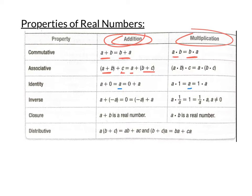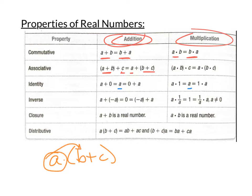Lastly, we have the distributive property. If we have a times the quantity b plus c, notice this one falls under both categories because it involves addition and multiplication at the same time. We distribute the multiplication over addition, so a becomes a factor multiplied by both b and c. Our result is a times b plus a times c. Going through those quickly — that's just a refresher, a reminder of how numbers work.